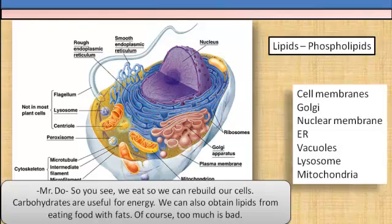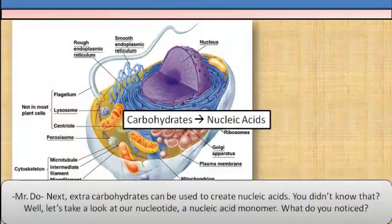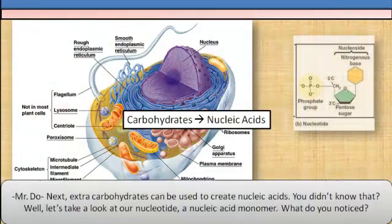We can also obtain lipids from eating food with fats. Of course, too much is bad. Next, extra carbohydrates can be used to create nucleic acids.